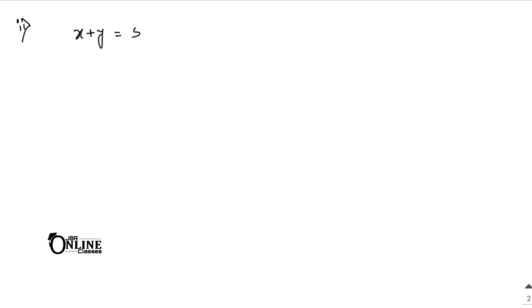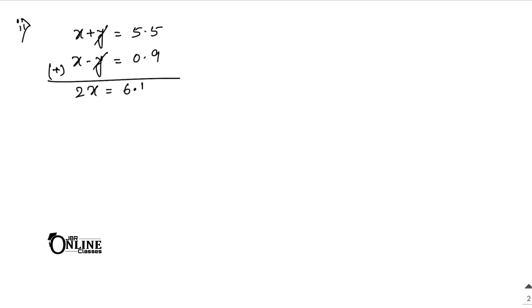Problem 2.2: x plus y equals 5.5, and x minus y equals 0.9. This is straightforward — just add the two equations so y cancels out. Then 2x equals 6.4, giving x equals 3.2. Substituting back, y equals 5.5 minus 3.2 equals 2.3.